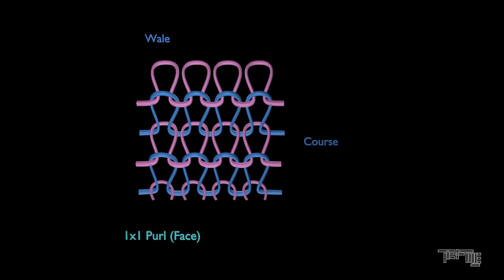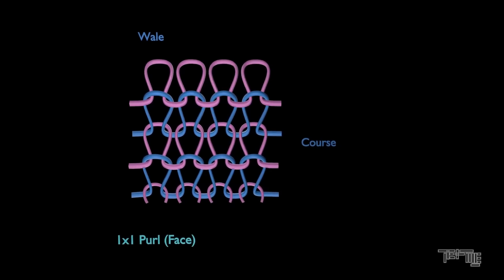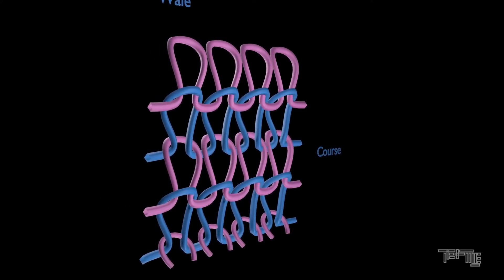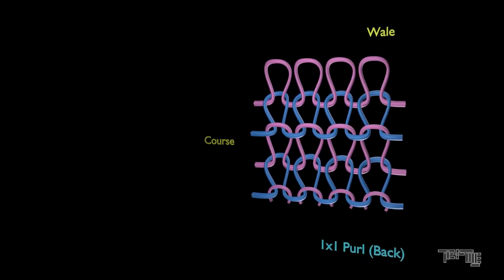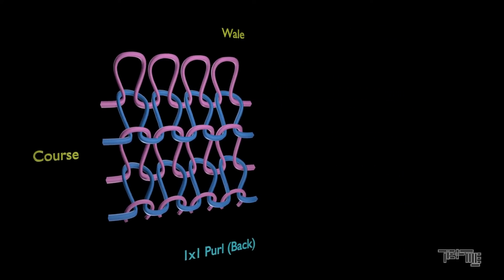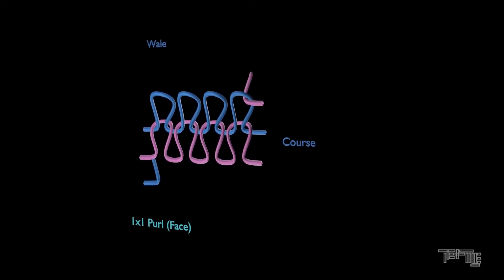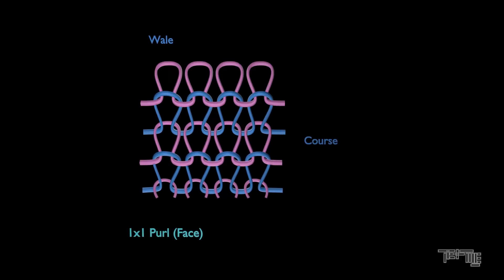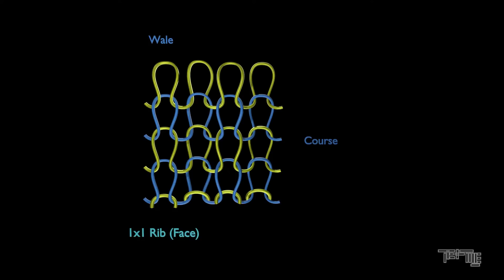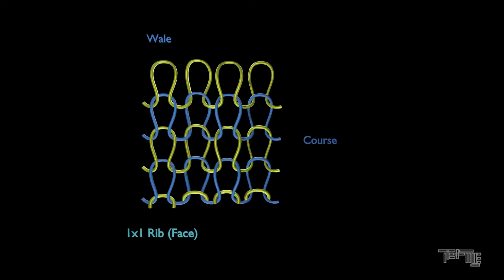Purl fabrics are characterized by the fact that they have face and reverse loops in the same wale. Each course can be made up of a combination of face and reverse loops. Both face and back side look similar, but reversed. Yarn can be unraveled from both top and bottom direction. Purl fabric is used in heavy outerwear, undergarments, and sweaters. Purl fabric is called double jersey fabric.